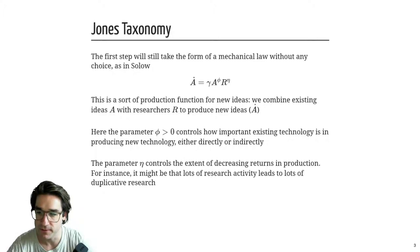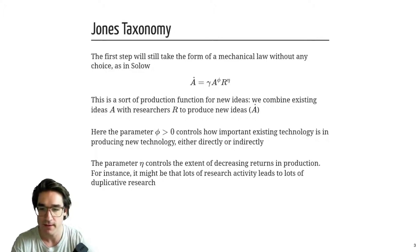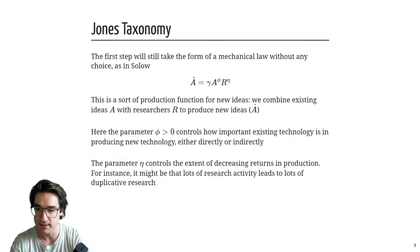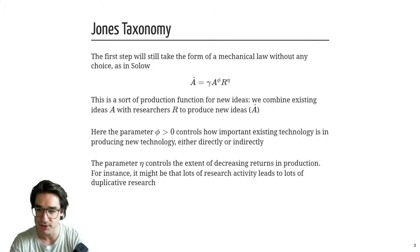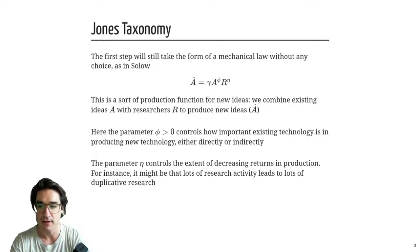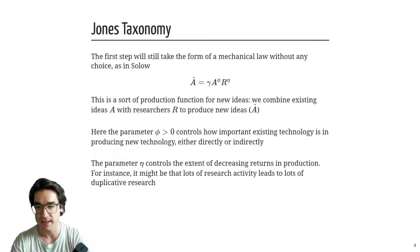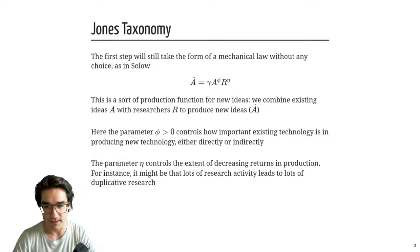Those are the intuitive arguments. η should be between zero and one — it's a regular concave production function. φ is not necessarily clear; you could see one, less than one, or maybe greater than one. We're going to investigate φ. It should be positive — having better technology today should at least not make you worse off producing future technology. We'll leave open whether it's greater or less than one and try to reverse-engineer: if it was greater, equal to, or less than one, what would happen?